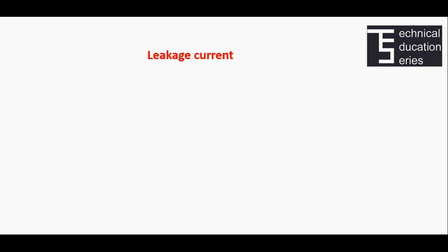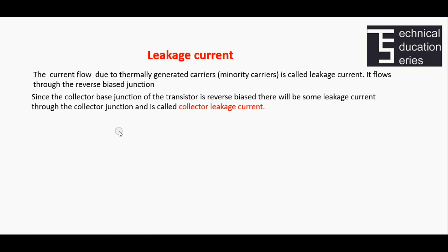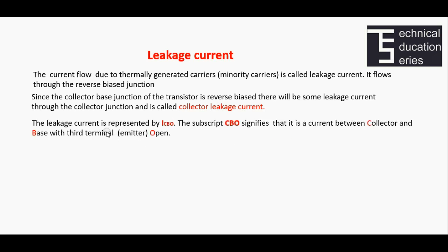Leakage current in a transistor. In any junction device, electron-hole pairs are generated by thermal energy, and these generated carriers can pass through a reverse biased junction. The current flow due to thermally generated minority carriers is called leakage current. Since the collector-base junction is reverse biased, there will be some leakage current through the collector junction, called collector leakage current, represented by ICBO. The subscript CBO signifies that it is a current between collector and base with the emitter terminal open.